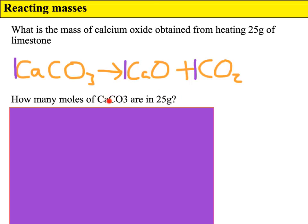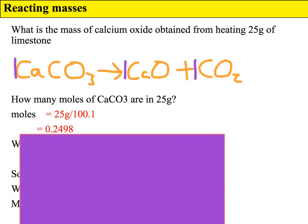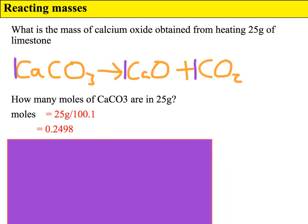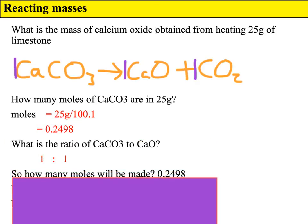So how many moles of calcium carbonate are there in 25 grams? You need the MR of the calcium carbonate. Use your equation - moles equals mass divided by MR. The MR is 101. So you've got your moles, which is 0.2498 of the calcium carbonate. Now we've got to use the ratios. What is the ratio of calcium carbonate to calcium oxide? Well, it's a 1 to 1 ratio. So therefore, how many moles will be made? Well, 1 to 1 ratio, so therefore 0.249 moles will be made.